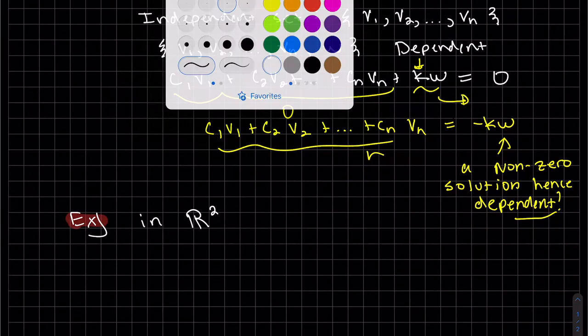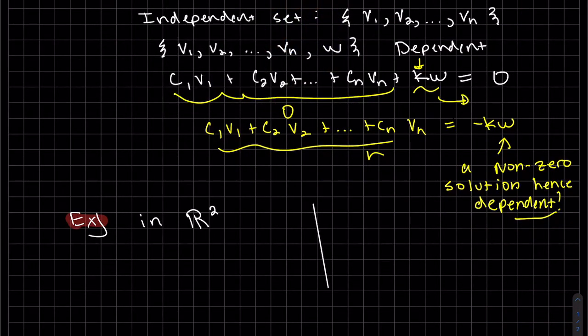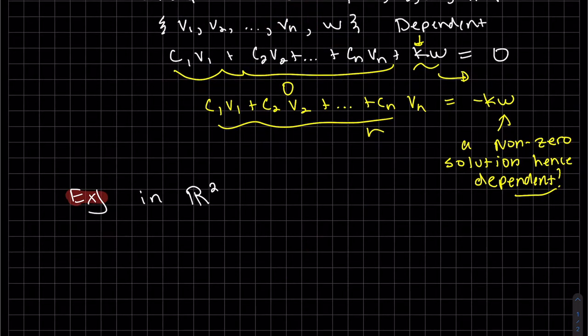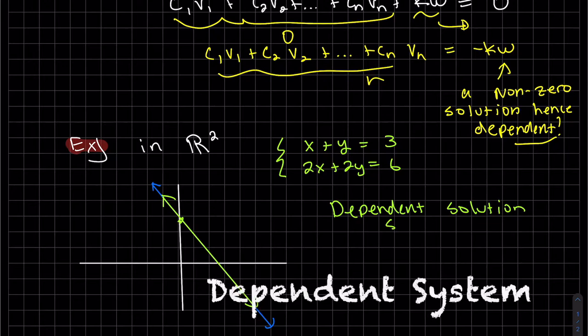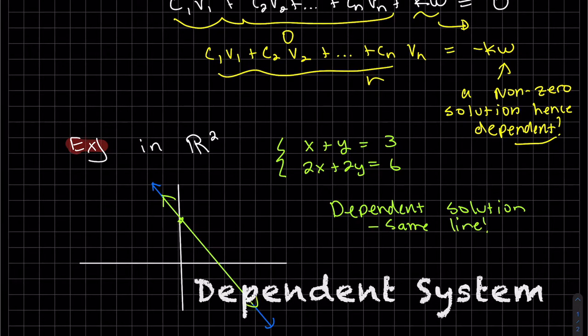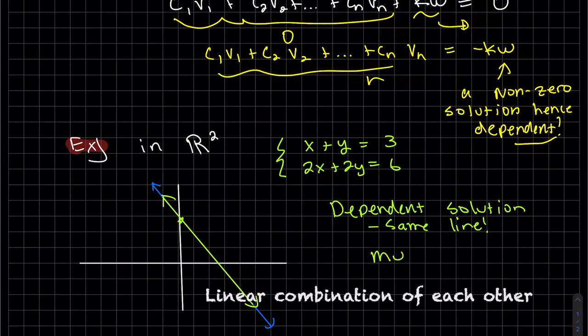If you look in R2, let's not throw out what we've learned before in algebra. In R2, if we have a system, we can see here that the second line is a multiple of the other. And if we graph them, they're actually the same line. This is called dependent. They're the same line because you can see here they are multiples of each other.